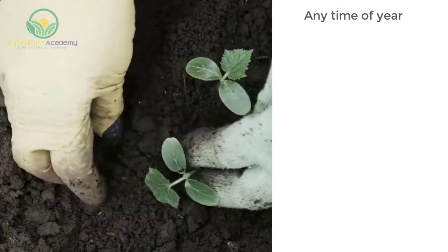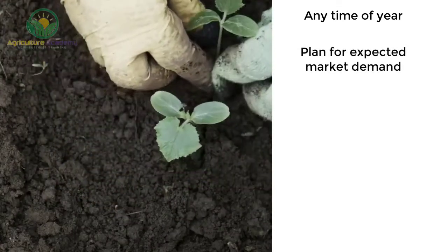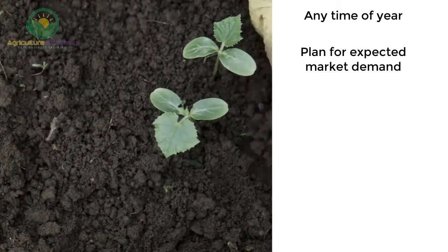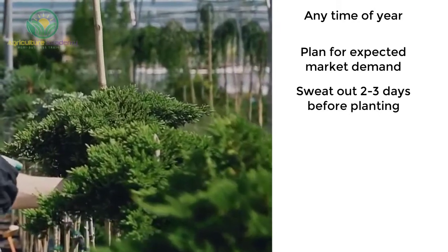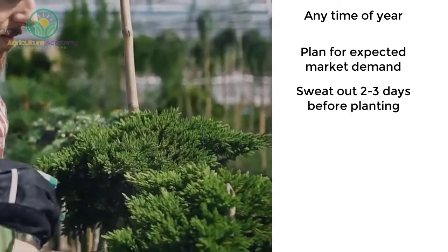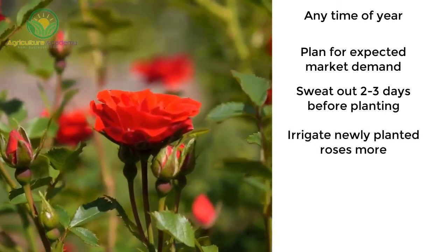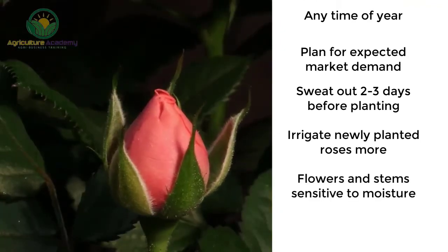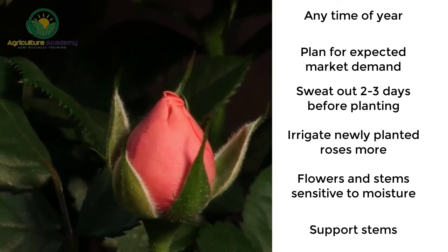Planting. Planting can happen at any time of the year. Planning should be done around expected market demand, taking special occasions like Valentine's Day into account. Before planting, the roses are sweated out in a warm, humid atmosphere two to three days before planting to improve root growth. The newly planted roses need to be irrigated more to prevent wilting. The stem length and flower size are sensitive to soil moisture. The stems should also be supported to prevent bending.